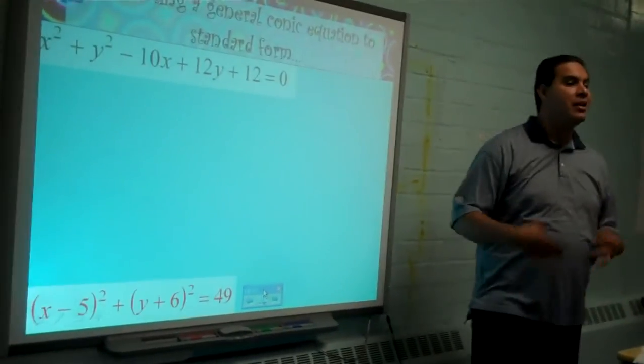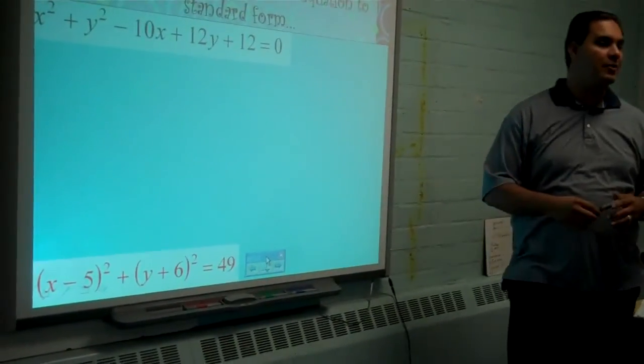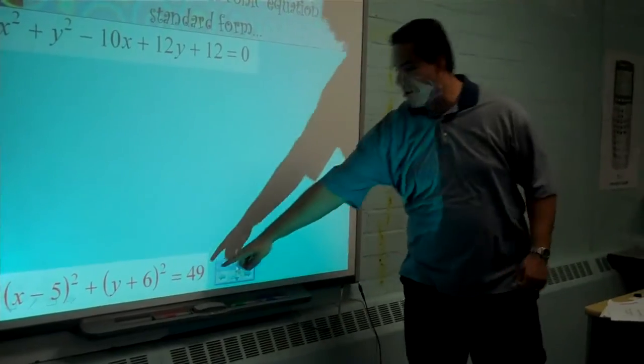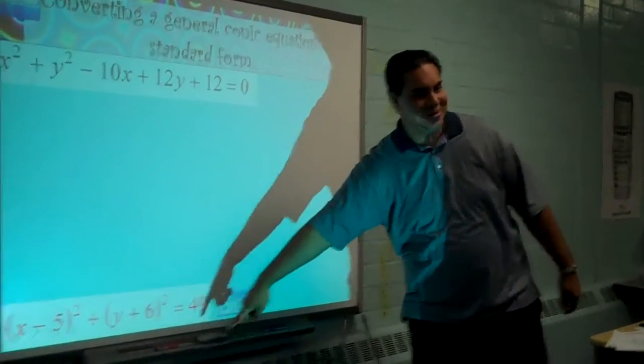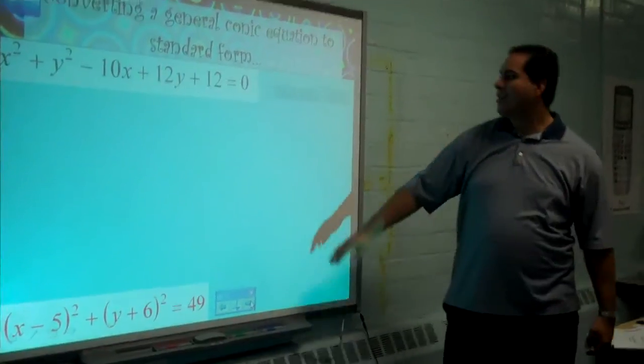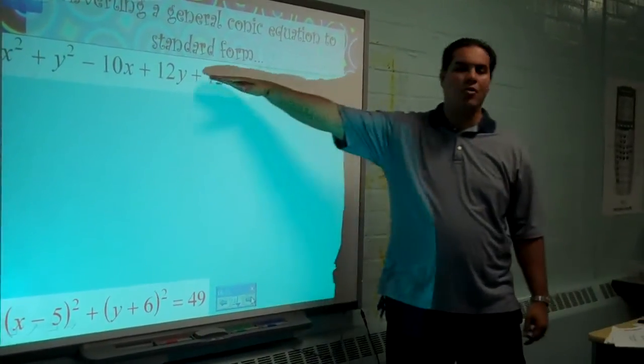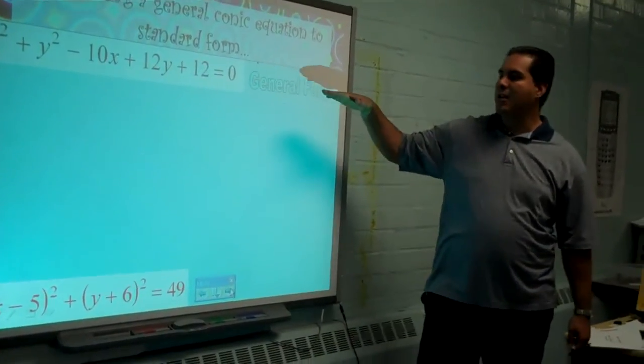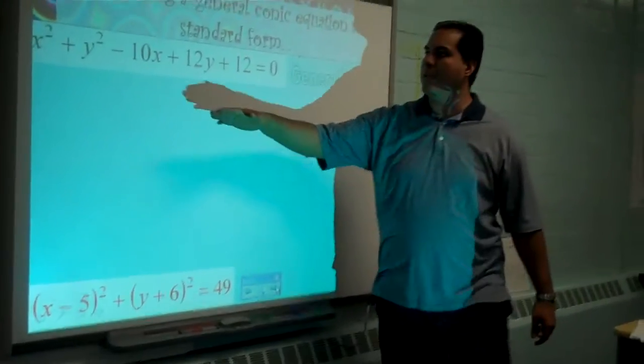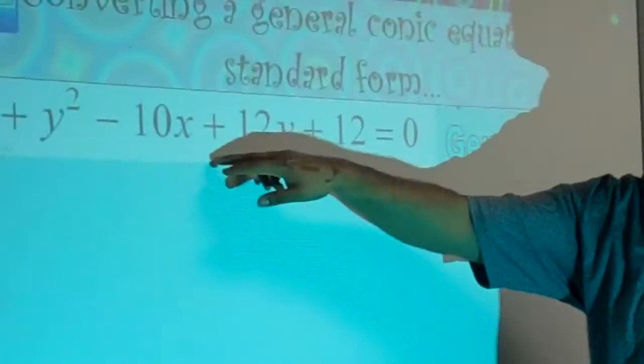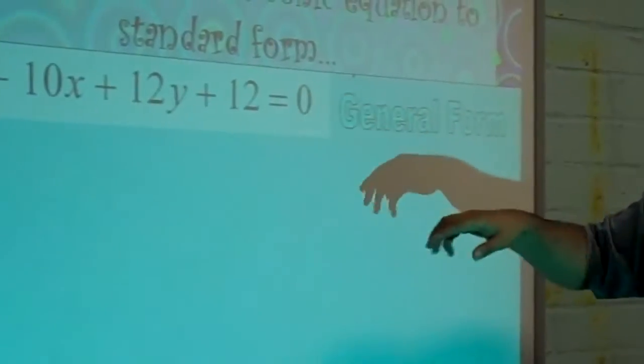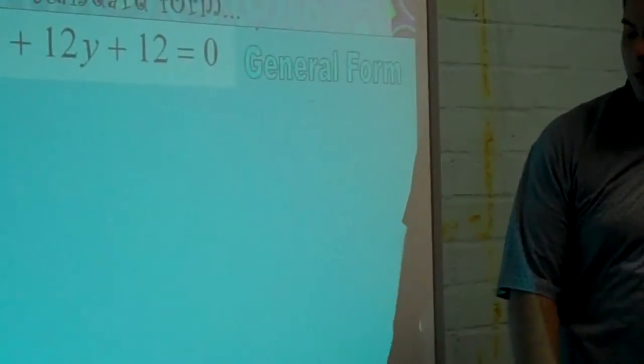How are we going to do that? These are the steps that we're going to follow. These are the steps. Not going from here this way, from here this way. First of all, what we call this equation is the general form. When it's written, when it doesn't look like standard form and it's written in your squared terms first, then your x and y terms and your constant, we call that general form.